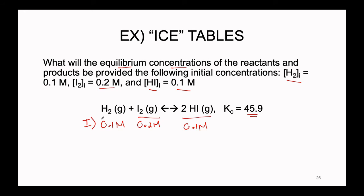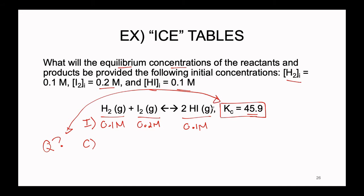The next row label is C for change, which means we need to figure out which direction this reaction is going to shift. Our very first step in solving for equilibrium concentrations is to figure out what Q is. Since we have an equilibrium constant K, we can compare Q to K to figure out which direction the reaction shifts — will it move spontaneously in the forward direction to create more product, or in the reverse direction to create more reactant?